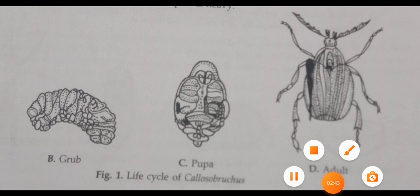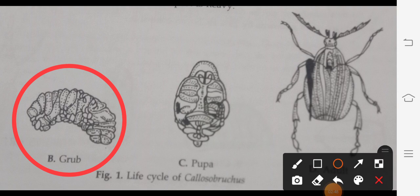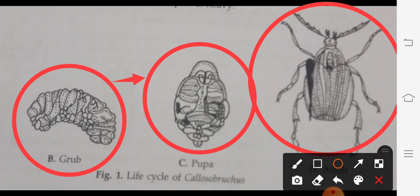The other stages are the grub. This is the grub. Because it is a beetle, so its intermediate stage is the grub. And this grub is converted into a pupa stage. This is the pupa and then it is converted into the healthy adult. After molting, it is converted into adult.